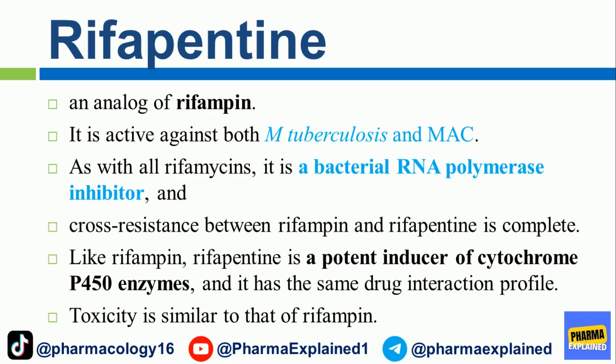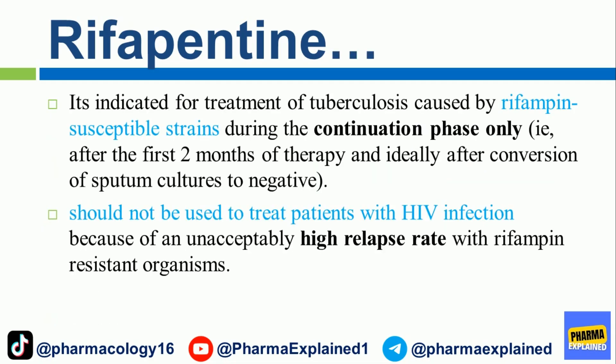Rifapentine is an analog of rifampin, active against both M. tuberculosis and MAC. As with all rifamycins, it is a bacterial RNA polymerase inhibitor and cross-resistance between rifampin and rifapentine is complete. Like rifampin, rifapentine is a potent inducer of cytochrome P450 enzymes with the same drug interaction profile, and toxicity is similar. It is indicated for treatment of tuberculosis caused by rifampin-susceptible strains during the continuation phase only — i.e., after the first two months of therapy and ideally after conversion of sputum cultures to negative. It should not be used to treat patients with HIV infection because of an unacceptably high relapse rate with rifampin-resistant organisms.